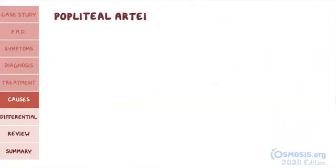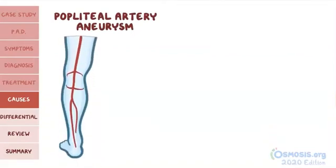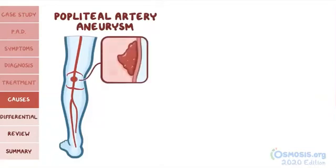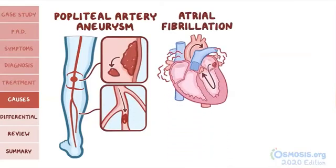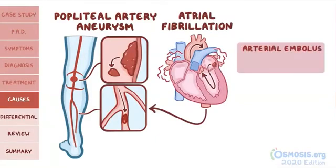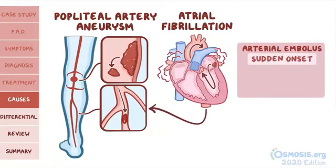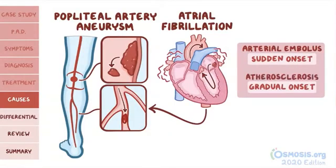A popliteal artery aneurysm is another potential cause. Due to the stasis of the blood in the area of the aneurysm, a clot can form. That clot can then embolize and occlude smaller vessels in the legs. In addition, atrial fibrillation can dislodge clots that travel from the heart to the limbs, causing the same kinds of problems. A high-yield concept is that with an arterial embolus, there is a sudden onset of symptoms rather than the gradual onset of symptoms caused by atherosclerosis.